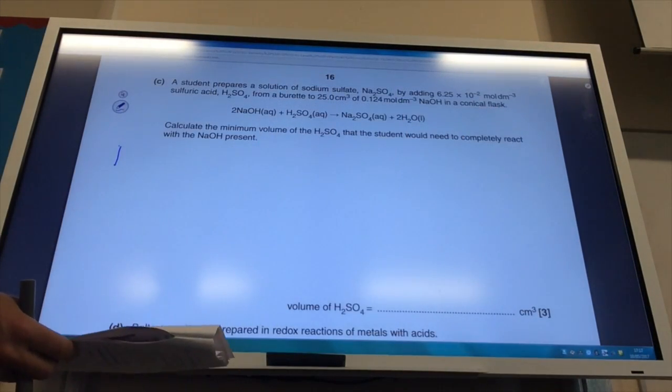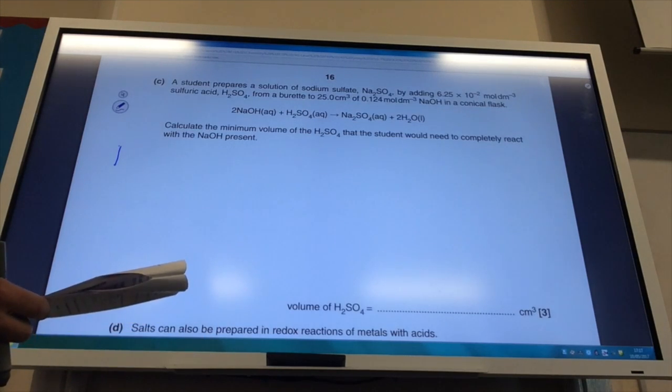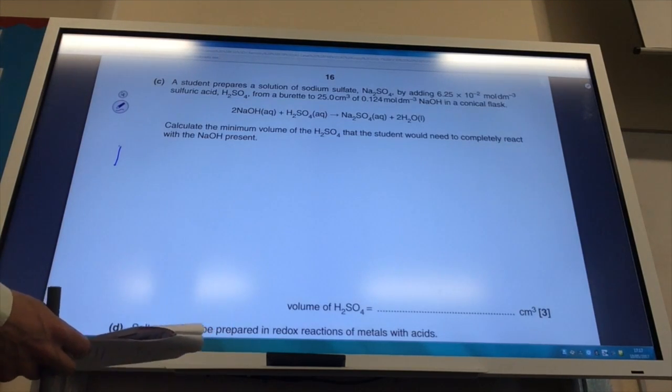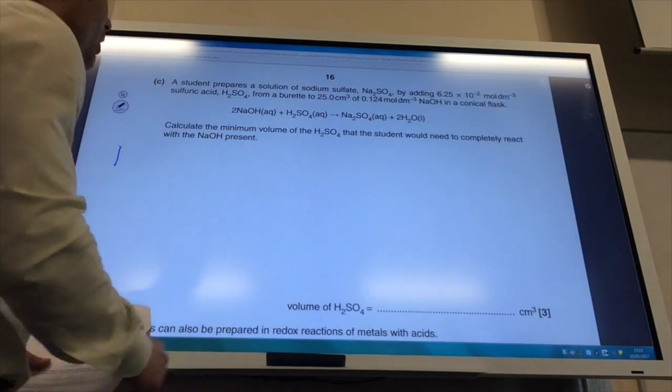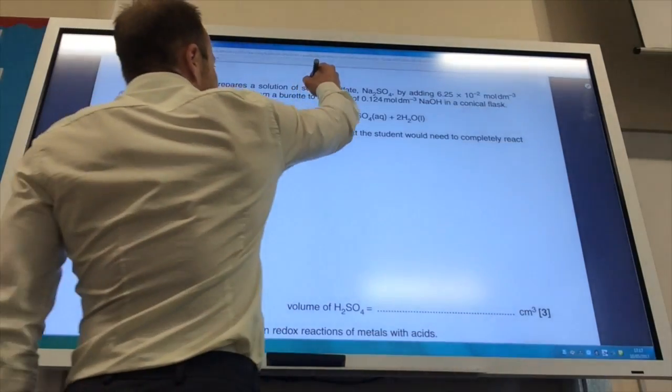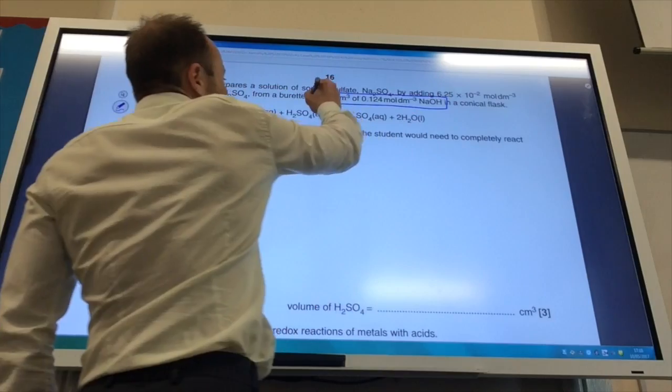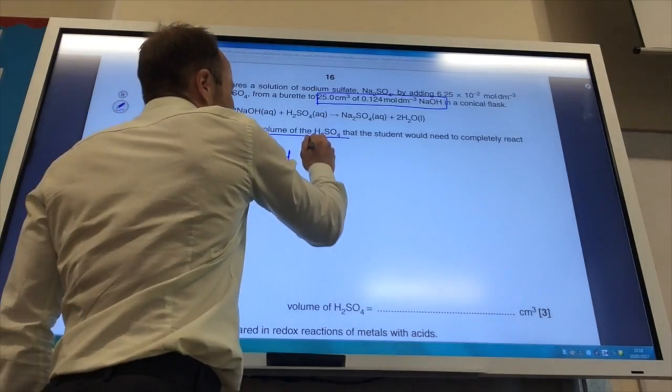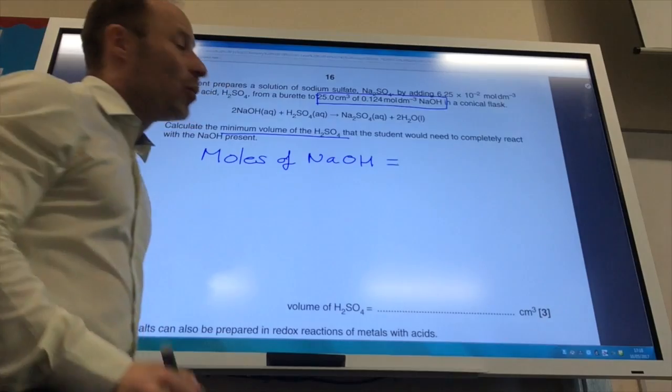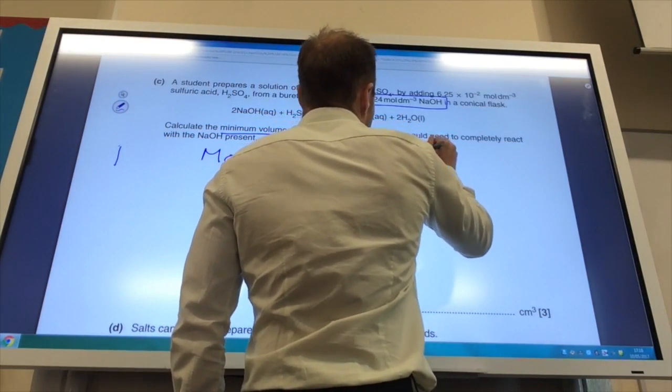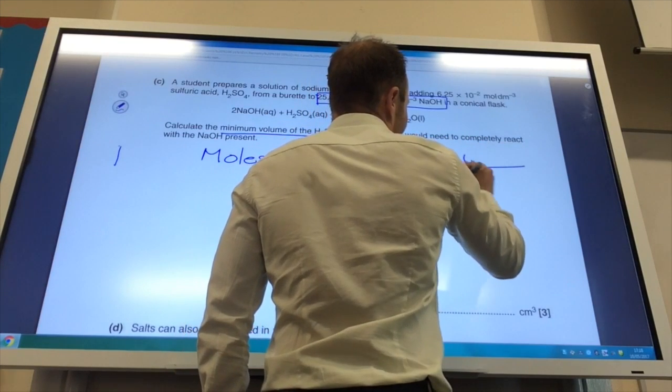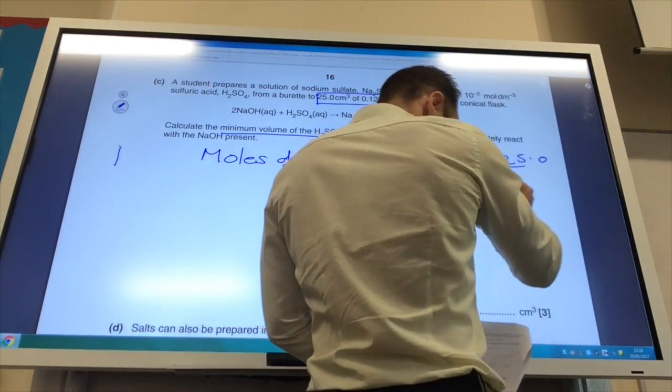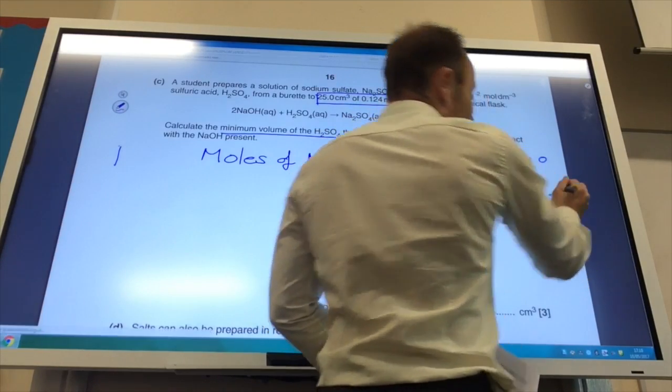Right, okay, so part C then. The student prepares a solution of sodium sulfate by adding 6.25 times 10 to the minus 2 moles per decimetre cubed of sulfuric acid from a burette to some sodium hydroxide in a conical flask. Calculate the minimum volume of sulfuric acid that I need. Well, if you look up here, I have been given a volume and a concentration of sodium hydroxide. So, the first thing to work out are moles of NaOH, which is going to equal concentration times volume over a thousand. And if you do that, you will get to 3.10 times 10 to the minus 3.